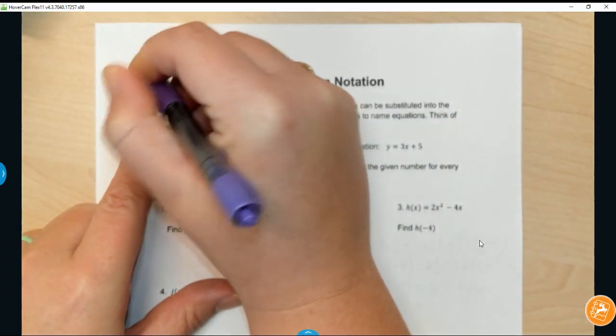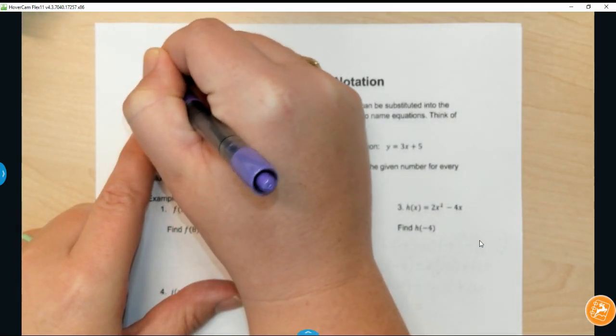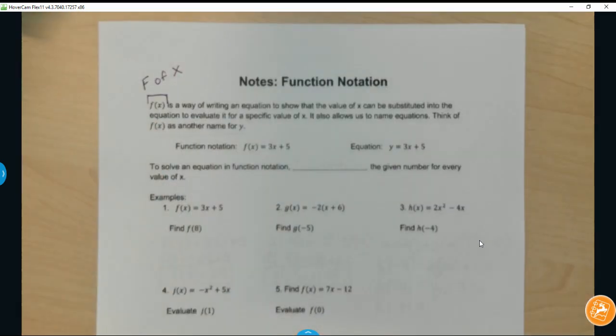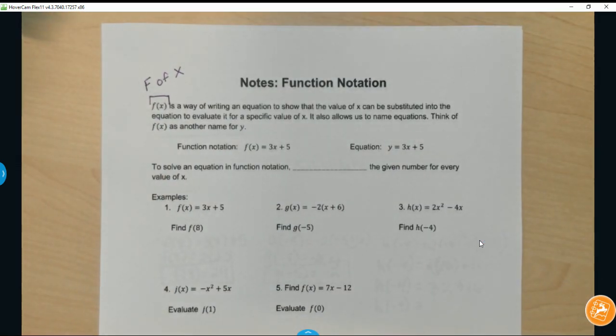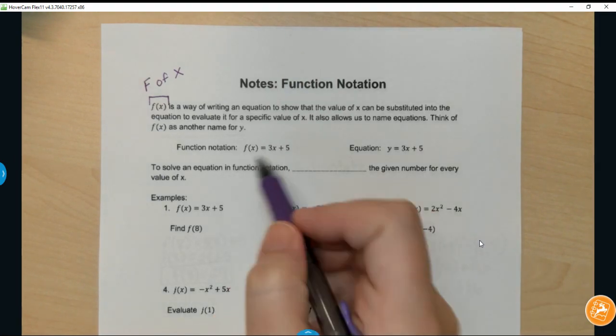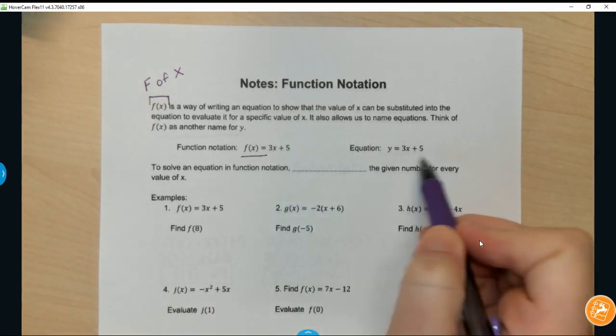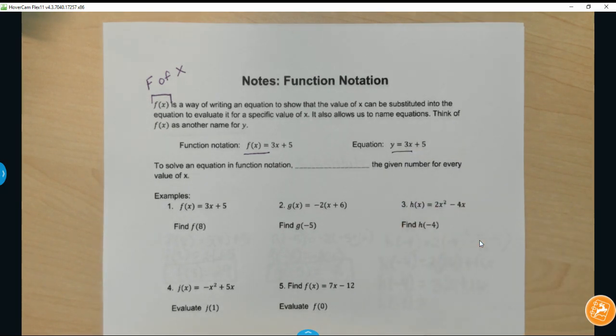f(x) is a way of writing an equation to show the value of x can be substituted into the equation to evaluate it for that specific value. It's also a way that we can name equations, so think of f(x) as another name for y. If you notice, f(x) equals is the exact same thing as y equals 3x plus 5.